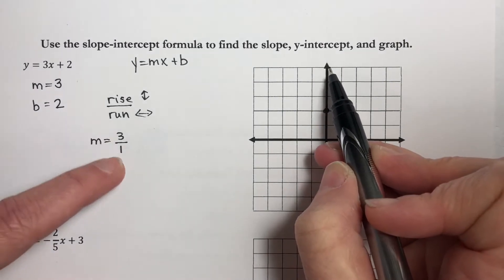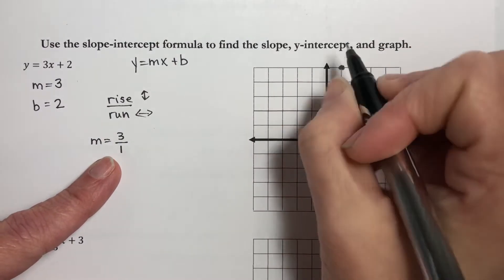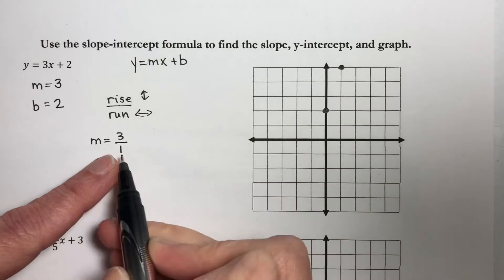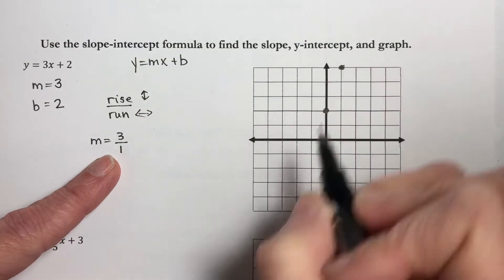I'm going to rise 3, 1, 2, 3, run 1. So since this is positive, I go up. Since this is positive, I go right. So here's another point.